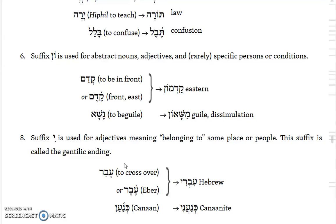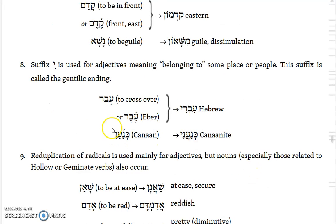The suffix -i is used for adjectives meaning 'belonging to' or an ethnic group. So you have the verb avar, 'to cross over,' and you have the personal name Eber, one of the ancestors of Abram. From Eber comes ivri — someone belonging to or deriving from Eber — meaning 'a Hebrew.' Then Kena'an is Canaan, but you get kenani, a Canaanite. Same thing with Yisrael, Israel — Yisraeli would be an Israelite.